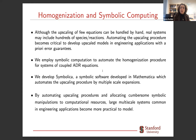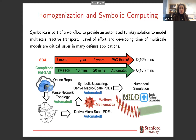Symbolic computing is the science that aims at automating a wide range of processes involved in mathematical physics. Although it is routinely used in combinatorics and computer science, the formalisms involved in high-level manipulations of mathematical constructs used in coarse-graining theories had never been implemented before. So we developed a code called Symbolica — a symbolic software developed in Mathematica — which automates the upscaling procedure by multiple-scale expansion, allocating cumbersome symbolic manipulations to computational resources so that large multi-scale systems common in engineering applications become more practical to model.